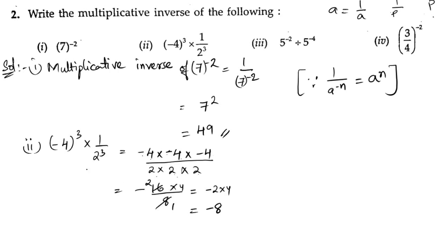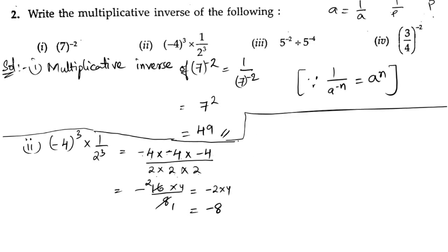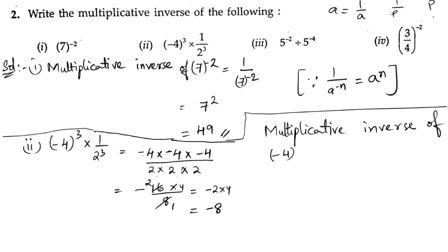Now we got the number. We need to write down its reciprocal. The multiplicative inverse of minus 4 to the power of 3 into 1 by 2 to the power of 3: we are having the number minus 8, so it will be minus 1 by 8. The reciprocal is minus 1 by 8.